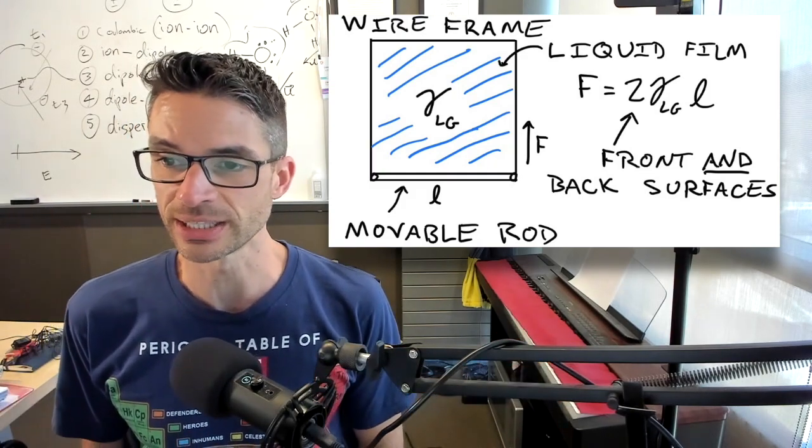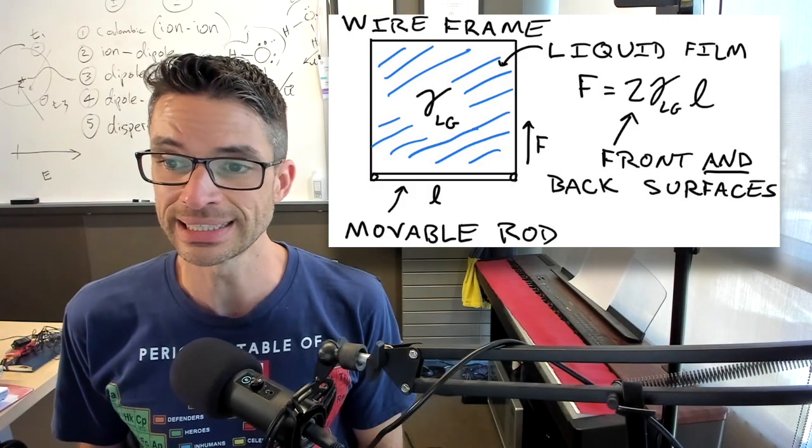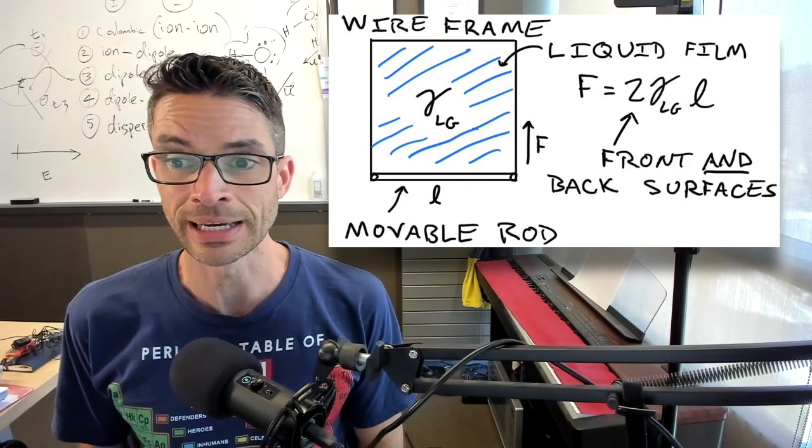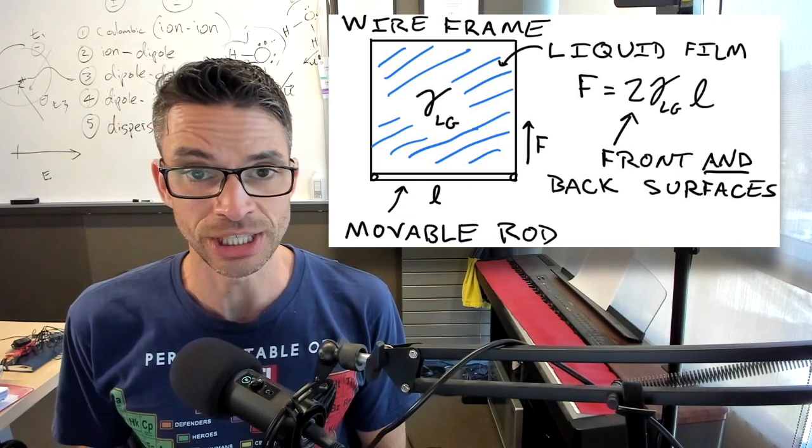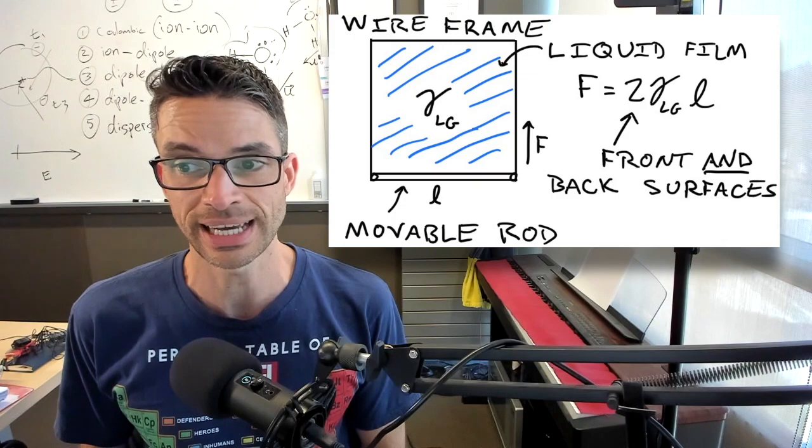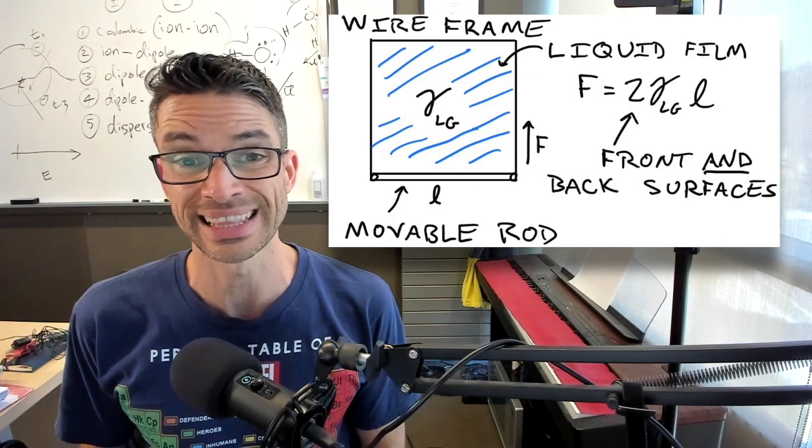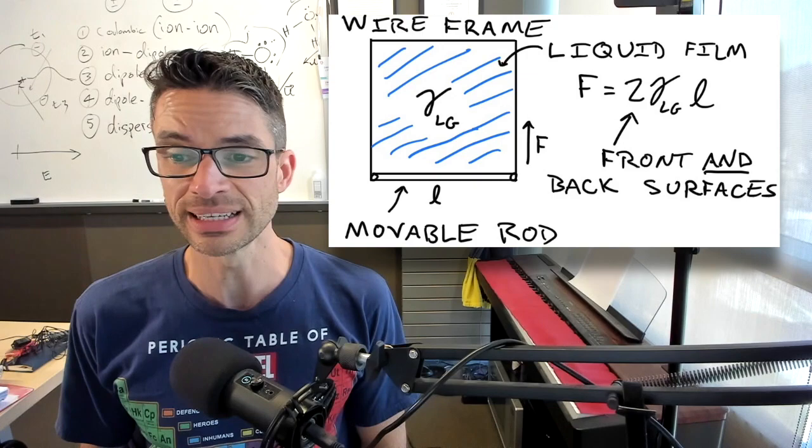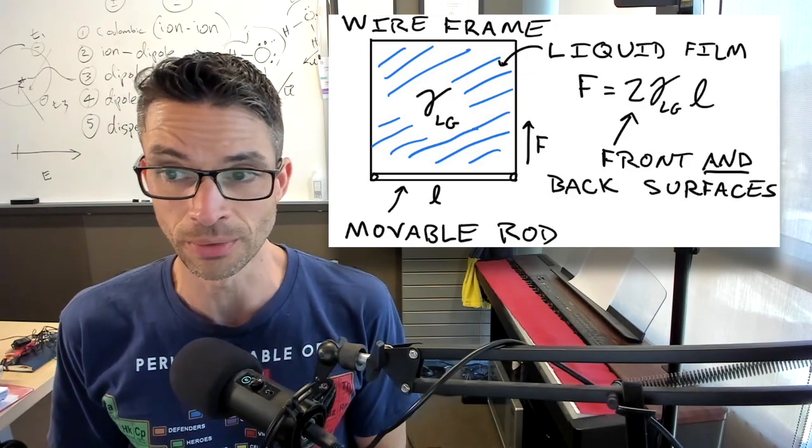So what is the surface tension? The surface tension in this case is two times gamma LG. So gamma LG is the surface tension between the liquid and the gas times L. L is the length of the movable rod.